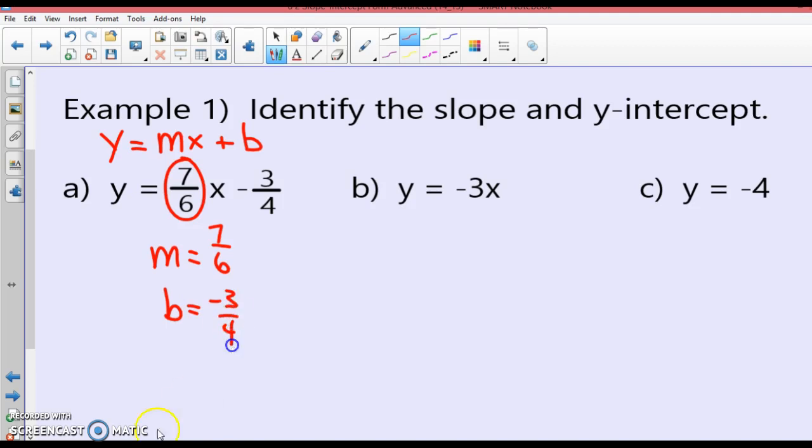What is our y-intercept? Yes. Now, if you do not believe me that it is negative 3/4, my slope-intercept form is plus b. If I change this to add the opposite, isn't that plus negative 3/4? So my y-intercept is negative 3/4. Alright, this one, is this in slope-intercept form? y equals mx plus b. What is the slope? What is the y-intercept? Zero.